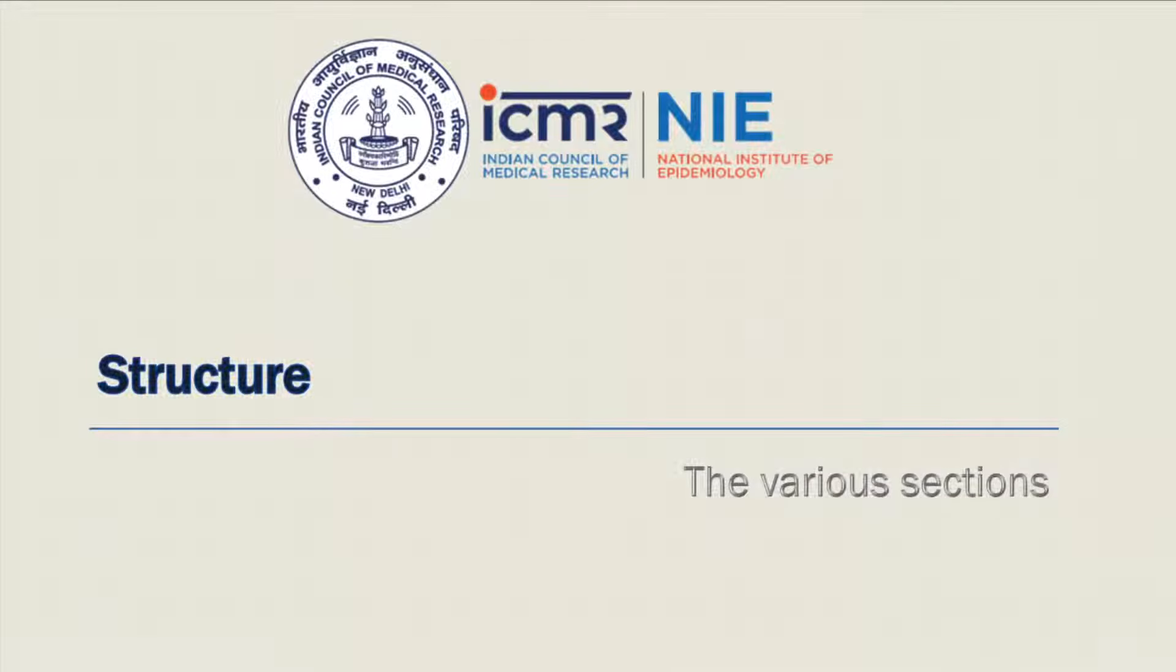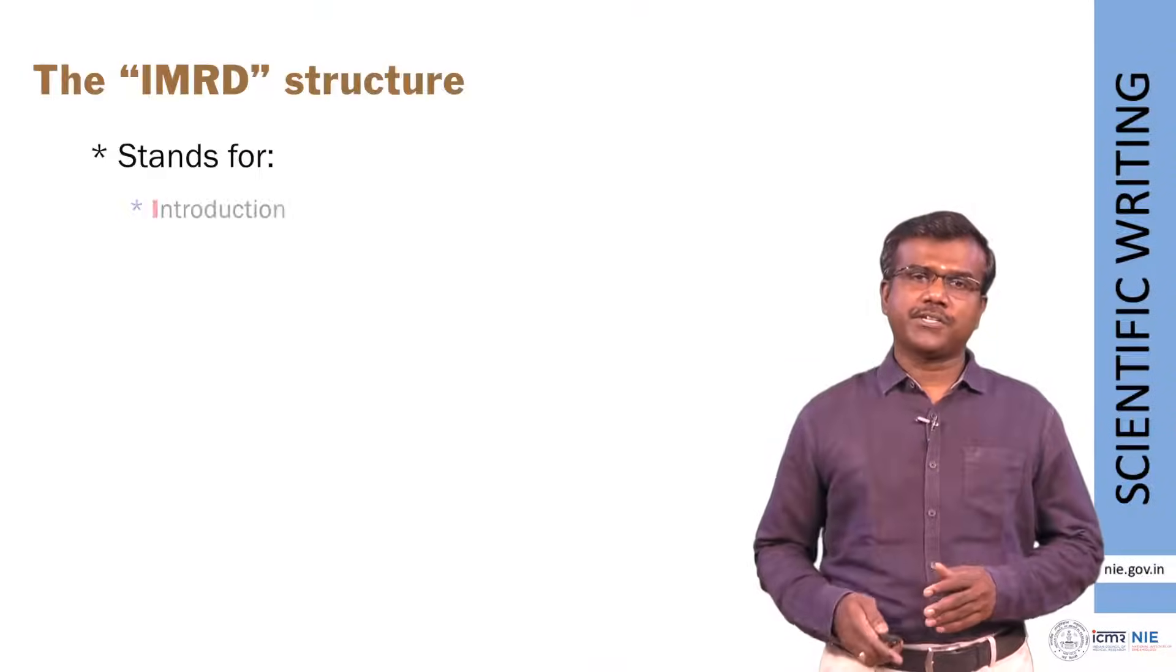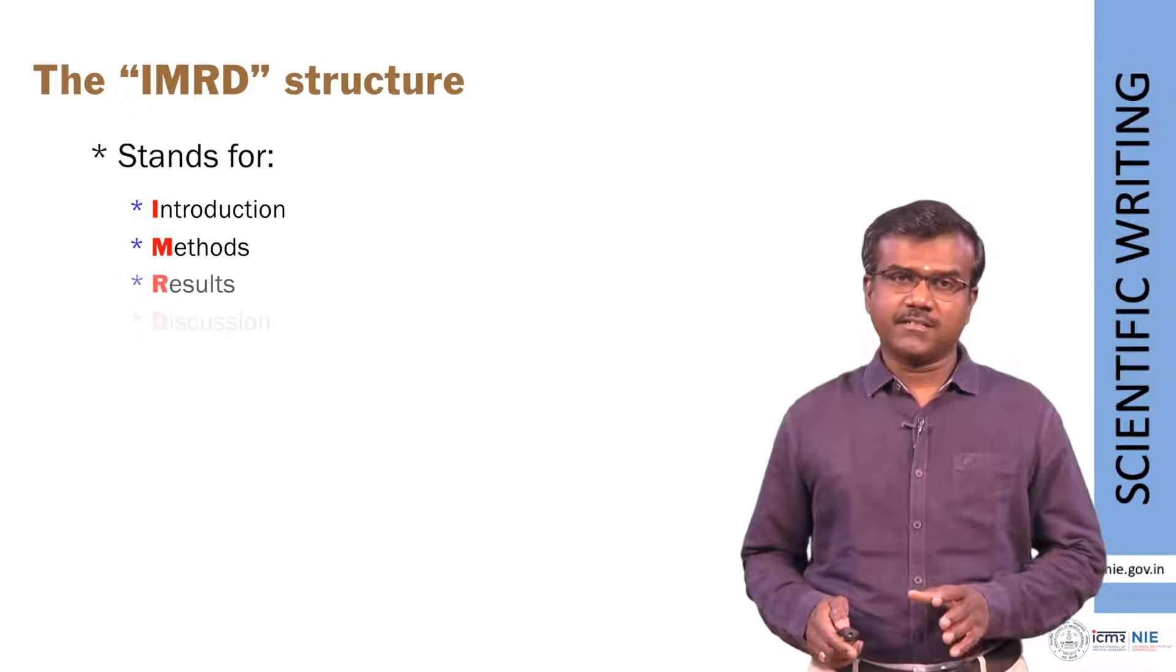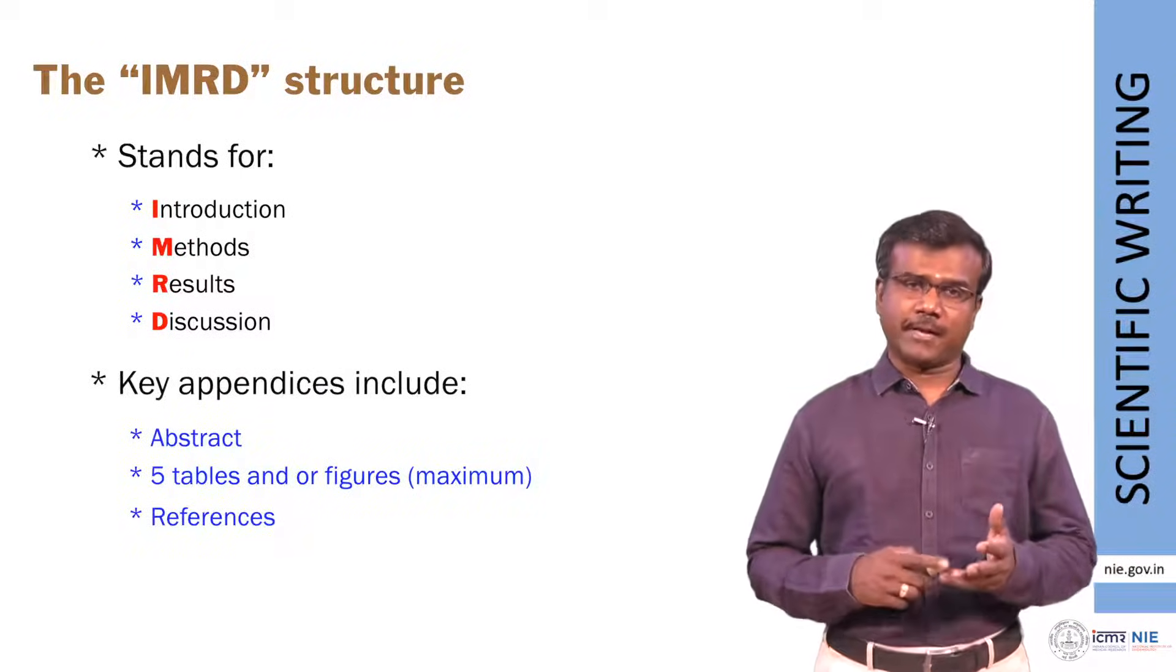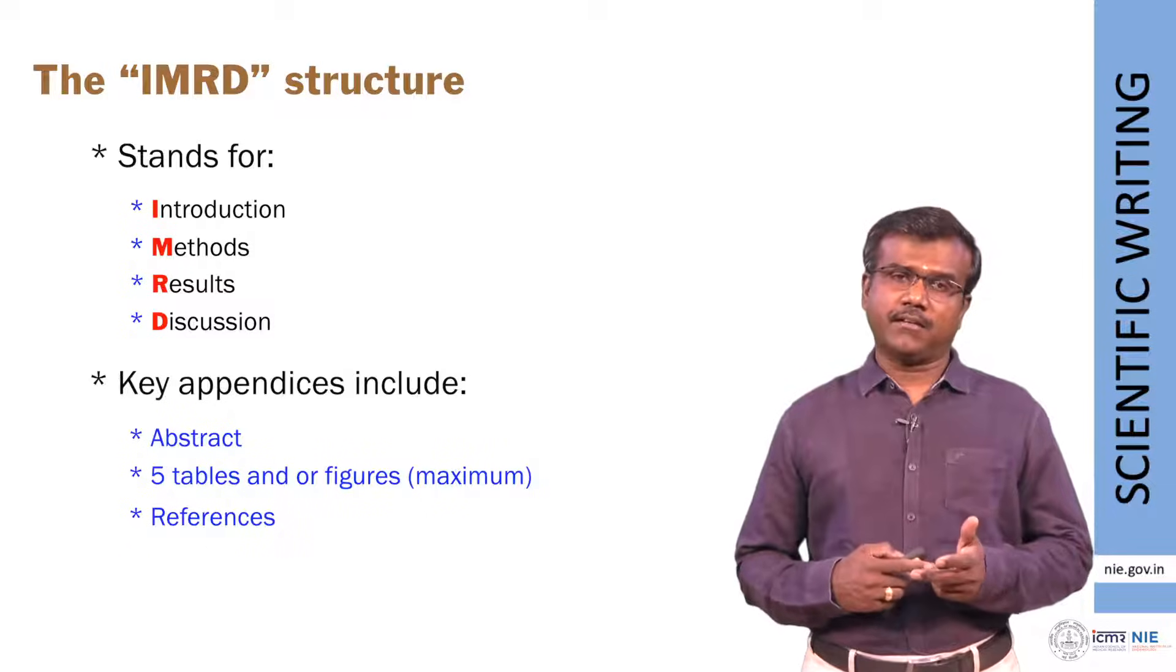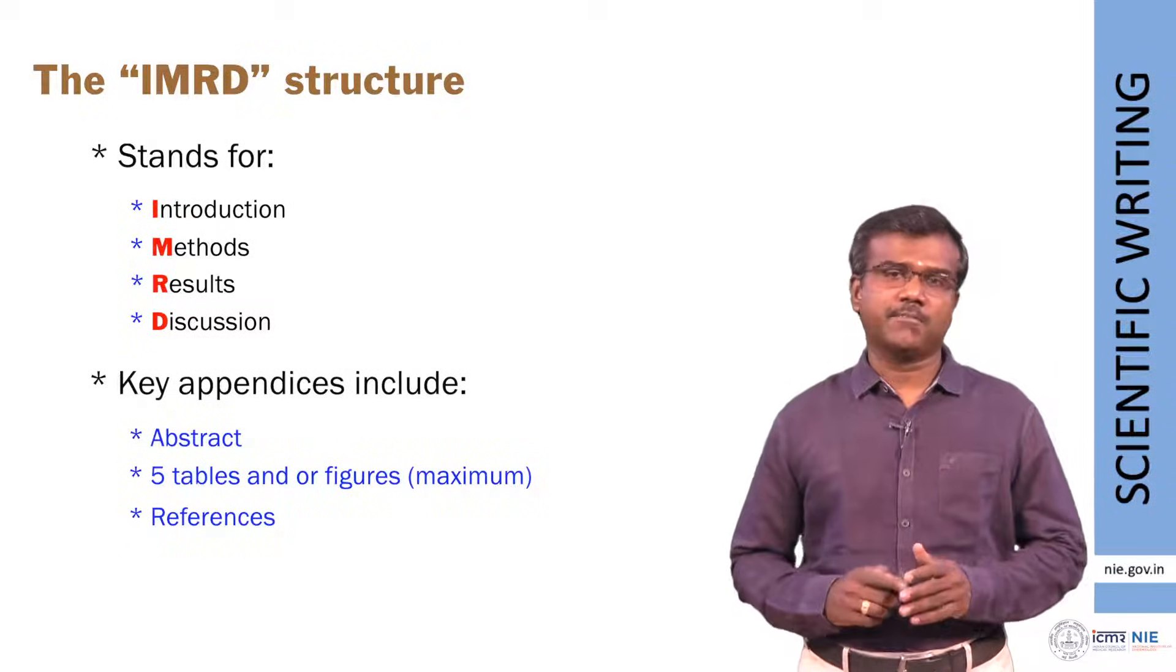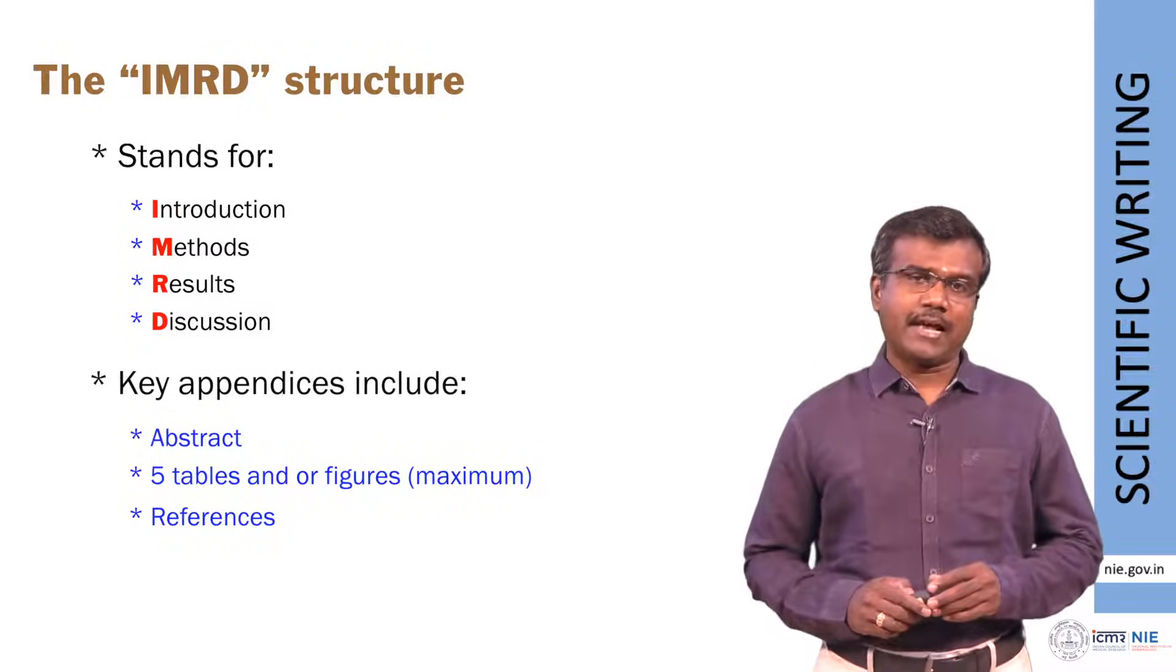The structure is usually referred to as IMRAD structure and that stands for introduction, methods, results and discussion. It also includes key appendices in terms of an abstract, five tables and or figures which is the maximum allowed in majority of the journals and references.